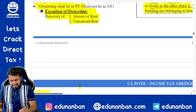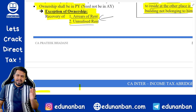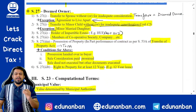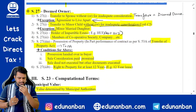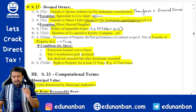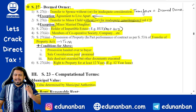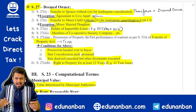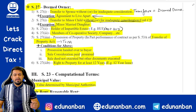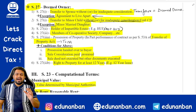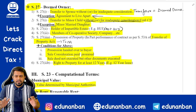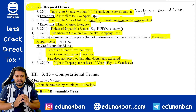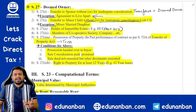Exception to ownership: arrears of rent and unrealized rent — which I will discuss along with those concepts. Section 27 gives six points of deemed ownership. Point one: if a person transfers house property to spouse without consideration or for inadequate consideration, then the transferor will be considered deemed owner. Exception: if there is an agreement to live apart, this provision will not apply.